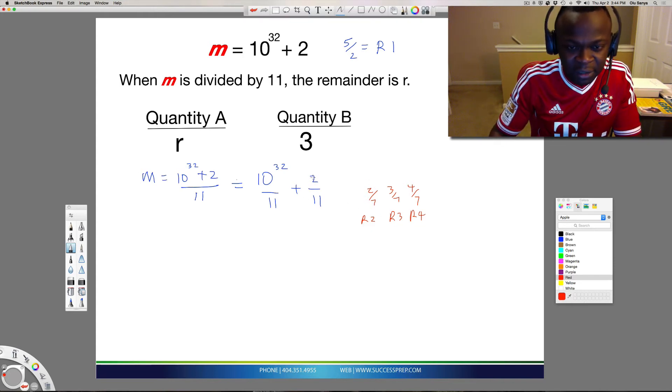So that means in this case, 2 over 11, the remainder is just 2. That's it. The remainder in this part is 2.